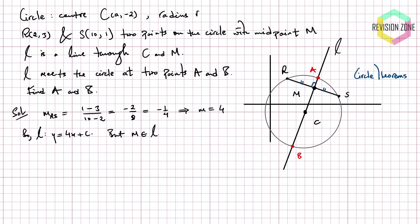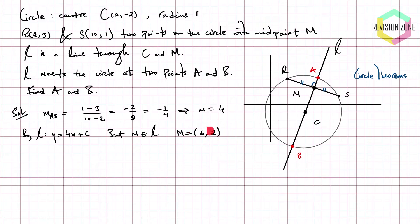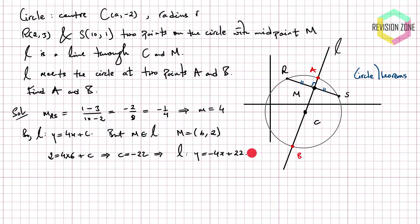We know that M lies on L, and we can figure out the actual coordinate of M because M is a midpoint. Using the midpoint formula: the x-coordinate is (2 + 10) / 2 = 6, and the y-coordinate is (3 + 1) / 2 = 2. So M is the point (6, 2). We substitute this into y = 4x + c: replacing x with 6 and y with 2 gives us a linear equation. Solving that, c turns out to be negative 22, which means we have found the equation of our line L: y = 4x - 22.